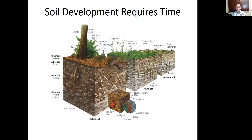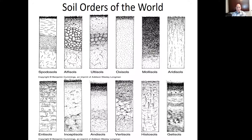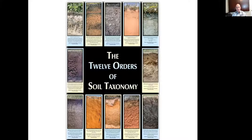Soils develop over time. They start off as very young, immature soils — they don't support a lot of plant life. As they get older, they develop. They break down, get smaller in size, and have better water and nutrient holding capacities. They're deeper, etc. We get 12 different soil orders that have different properties. Here are some pictures of these different soils — lots of cool stuff out there.